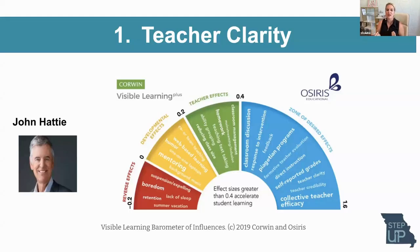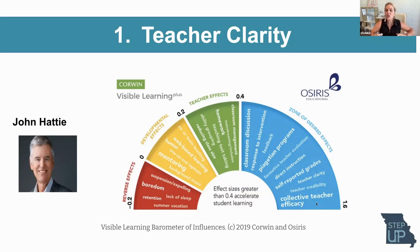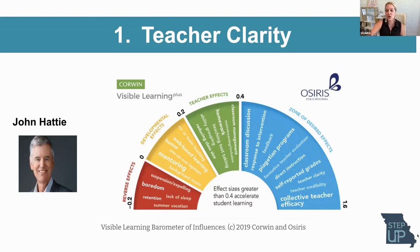So we're going to start with this idea of teacher clarity. I've got Hattie's wheel here — a visual graphic of all the research he's done. If you look to the right, it goes from biggest effect size to least effective. The idea of collective efficacy is 1.6, and I would argue clarity builds to collective efficacy. I have to individually believe I have clarity, and it's a group of teachers working together, believing we can make impact. Then there's teacher credibility and teacher clarity.